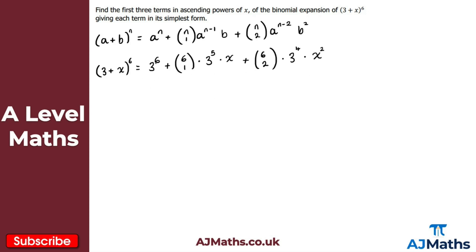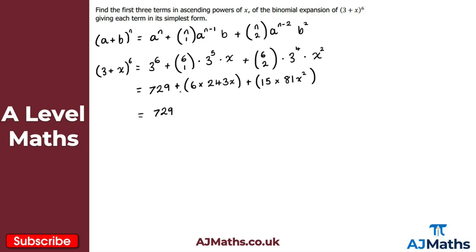Now putting it all into the calculator: 3^6 is 729. Then 6-choose-1 is 6, times 3^5 which is 243, times x gives 1458x. Finally, 6-choose-2 is 15, times 3^4 which is 81, gives 15 times 81x squared, which is 1215x squared. So the first three terms in ascending powers of x are 729 + 1458x + 1215x².